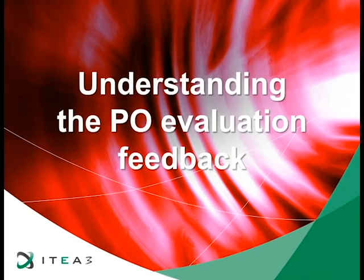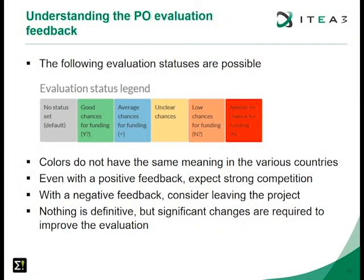Your PO has been evaluated by the steering group and by the public authorities (PAs). To understand this evaluation, there are six possible evaluation statuses ranging from 'no status set' — where the PA has not given an evaluation — through 'good chances for funding' to 'almost no chances for funding.' Keep in mind that colors do not carry the same meaning in all countries. A positive feedback may still mean strong competition from other projects in the same country; a negative feedback may mean significant changes are required, but nothing is definitive.